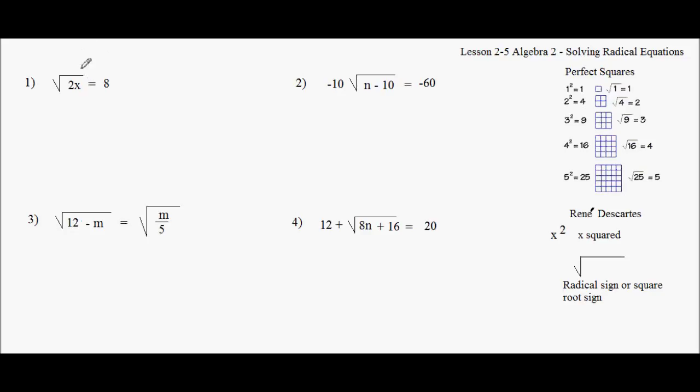So, quickly, what I'm going to do to solve radical equations is I square both sides. And that cancels that out. And I get 2x equals 64 divided by 2. And I get x is equal to 32. Bing. Done.